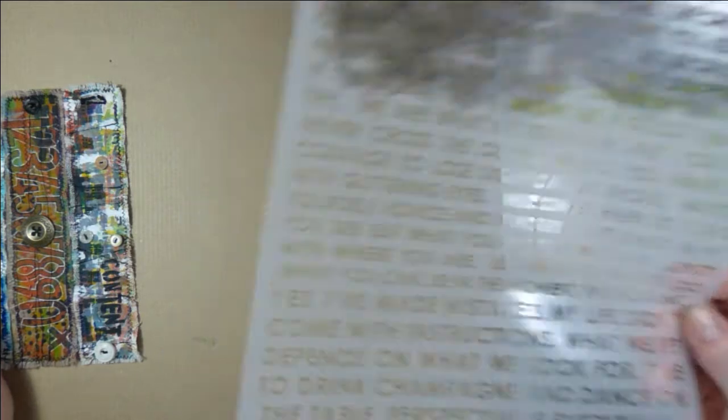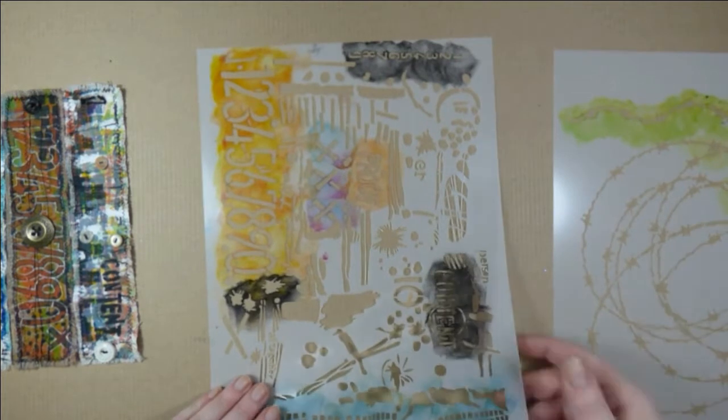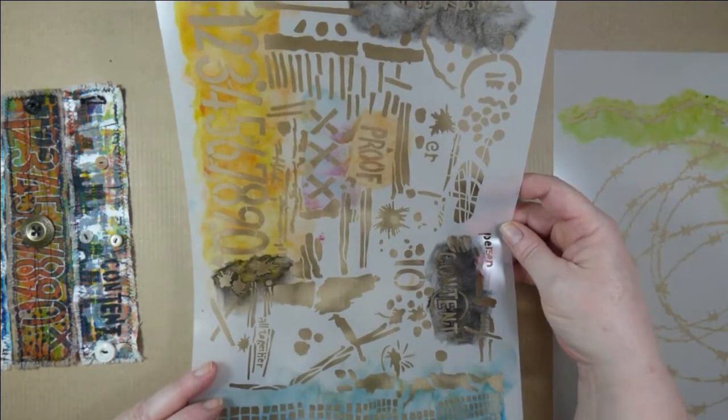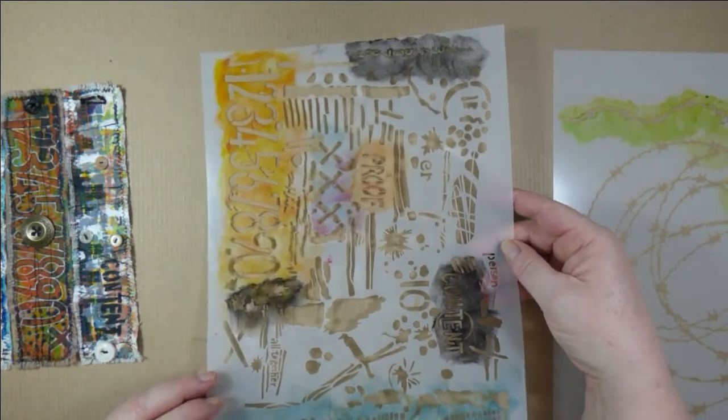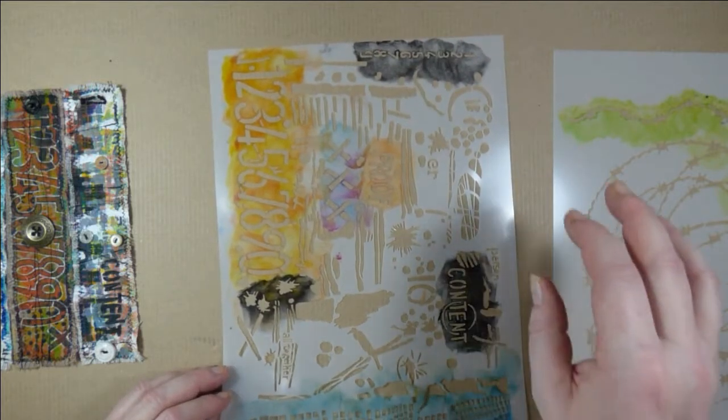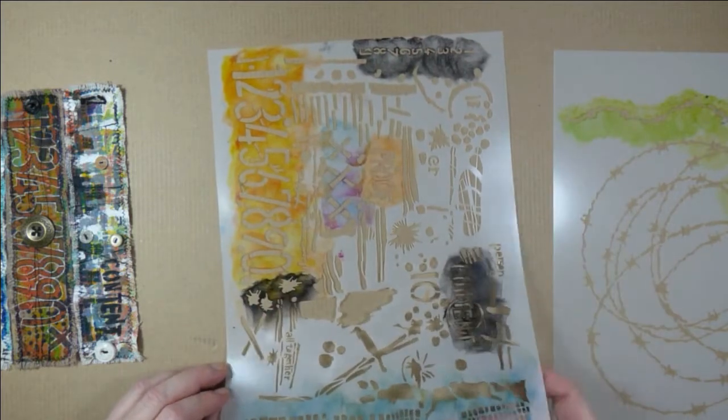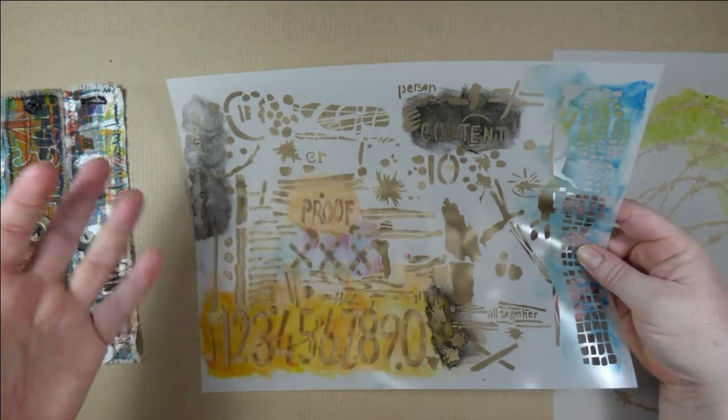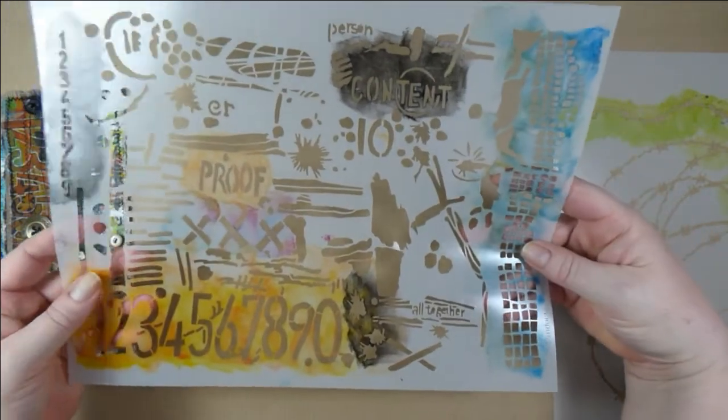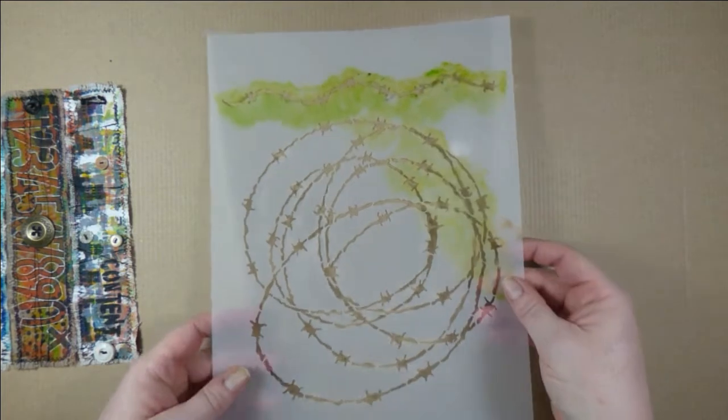Very important: Seth Apter's numbers stencil. I love this one because it has so many different designs on it, so you can use them in a load of different projects without ever having the feel that you're repeating yourself. Last but not least, I've also added a bit of barbed wire, and this one was designed by Mary Beth Shaw as well.